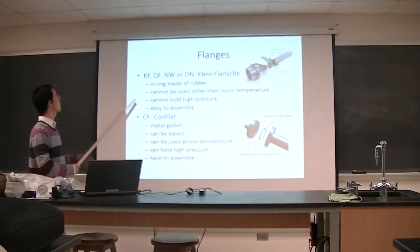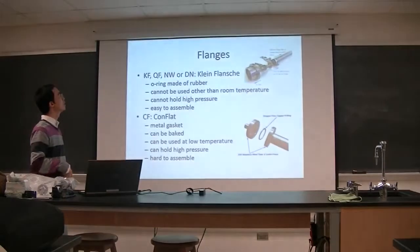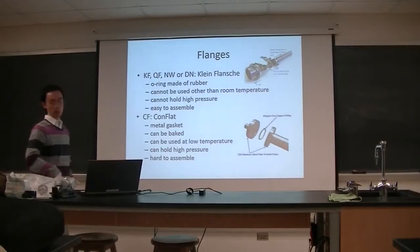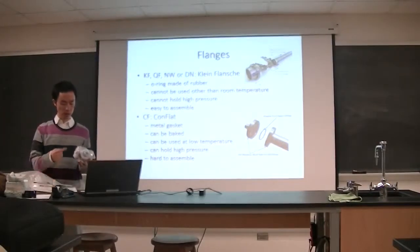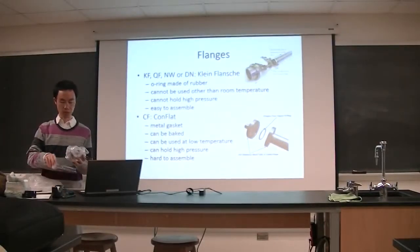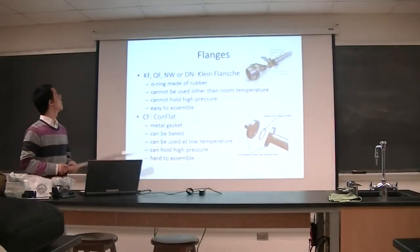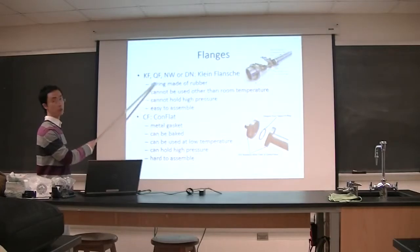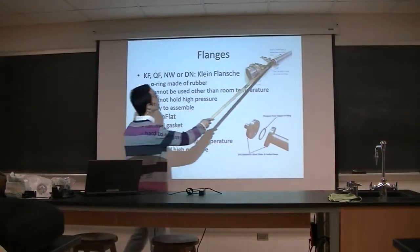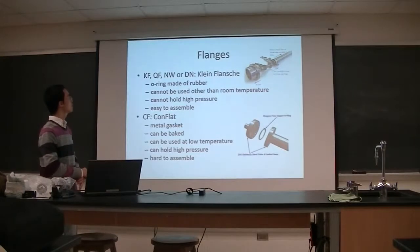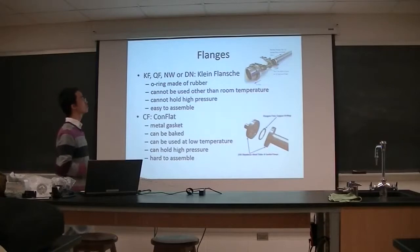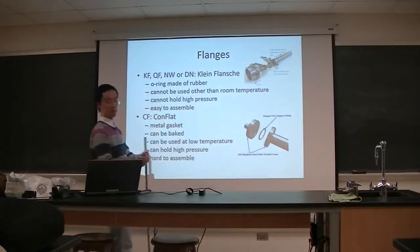This connecting piece is called a flange. Typically there are two types: KF flange and CF flange. The basic concept is that you have two parts — a chamber and a feedthrough — with a gasket in between to seal it. For the KF flange, the gasket is made of rubber, which we call an O-ring. Because it's made of rubber, it cannot be used below room temperature and cannot hold high pressure. However, it is very easy to assemble — you just use this clamp.